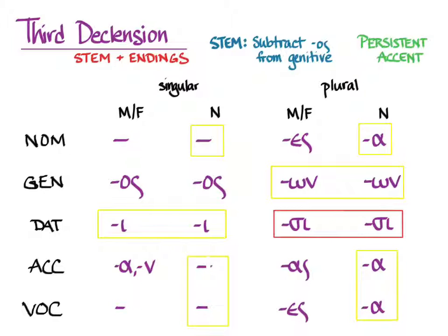Do notice though the dative plural. Unlike the other endings, the dative plural starts with a consonant, which means it's going to clash with and crash into the consonants at the ends of some of our third declension noun stems. Stay tuned for how to deal with it.